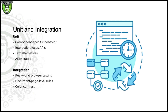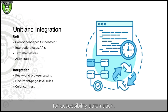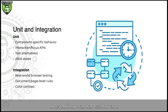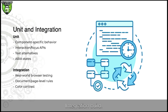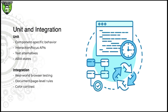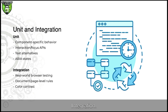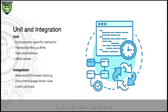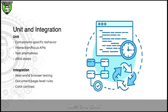Let's look at areas where automation works best, starting with unit and integration tests. Unit and integration tests are perfect for accessibility automation — this is where you can detect low-level bugs that take up vital time during manual testing and watch for regression. This also allows you to incorporate accessibility into your continuous integration builds. Areas to focus on in unit testing include component-specific behavior, interaction and focus APIs, and ARIA states. In integration: real-world browser testing, document and page-level rules, and color contrast.